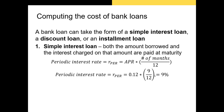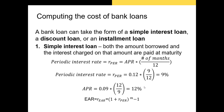The APR on a simple interest loan is always going to be the quoted rate — just the periodic interest rate scaled up to an annual rate. Most of the time when you're quoted an interest rate on a simple interest loan, that is your APR directly. Our EAR is calculated using the standard formula: (1 + periodic interest rate)^(12/9) − 1, since we're scaling up a 9-month loan to a full year. That gives us an EAR of 13.19%.